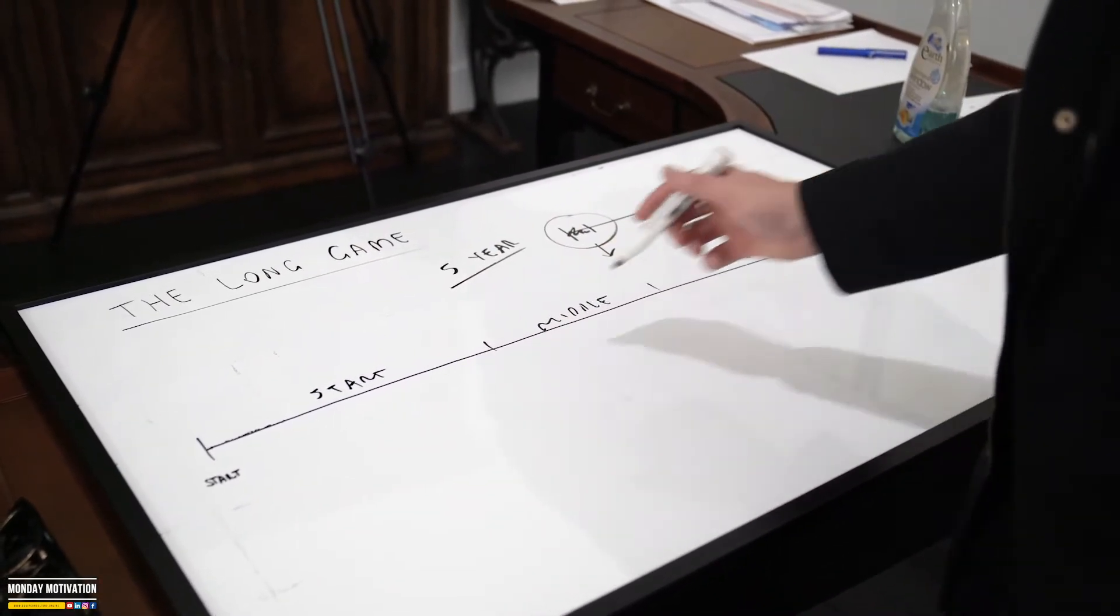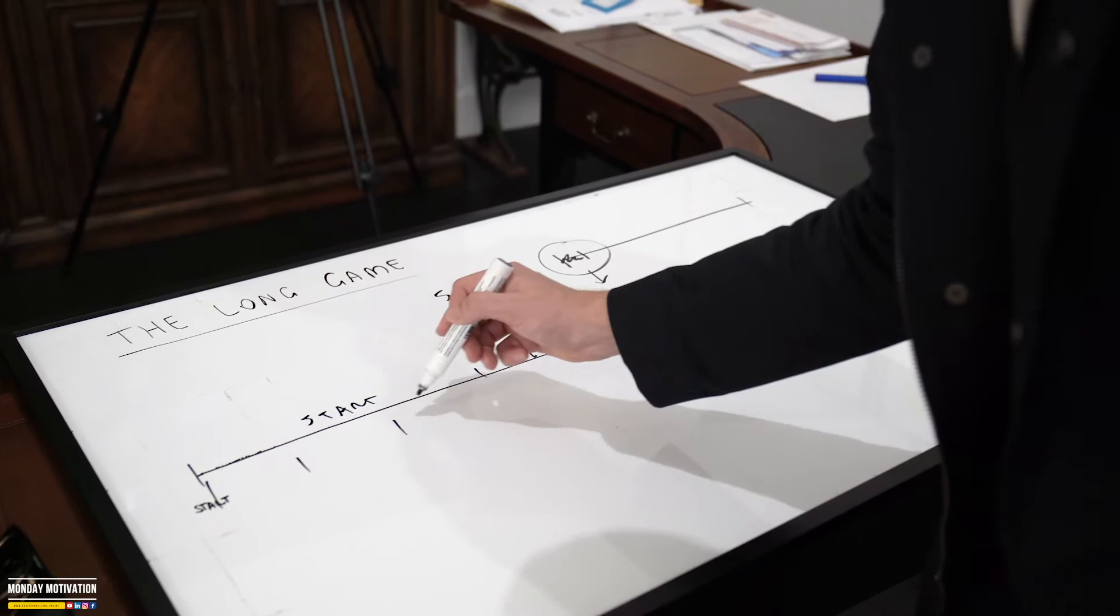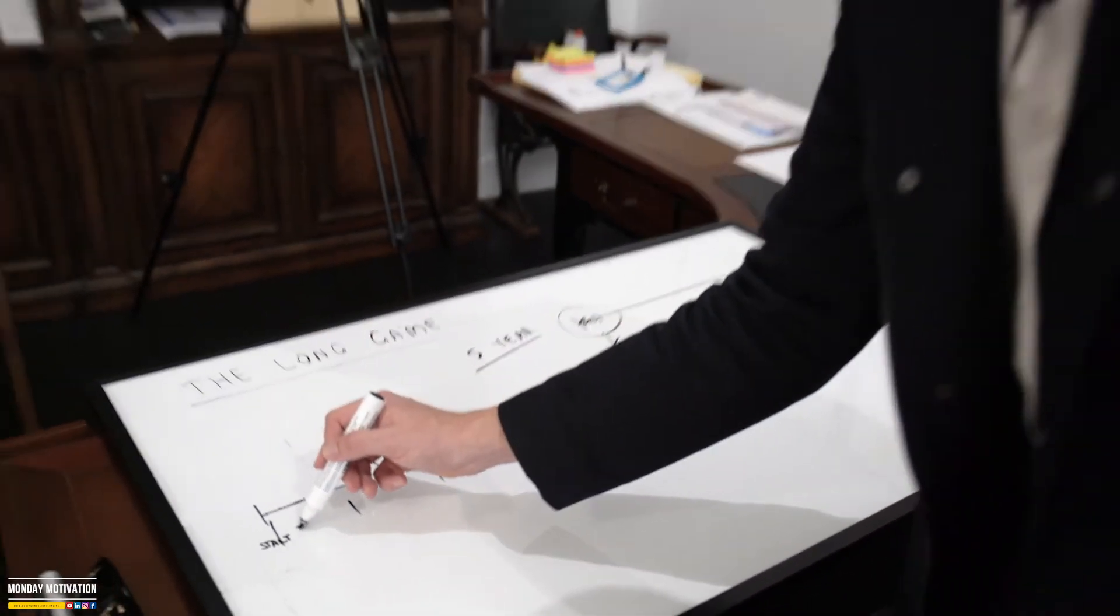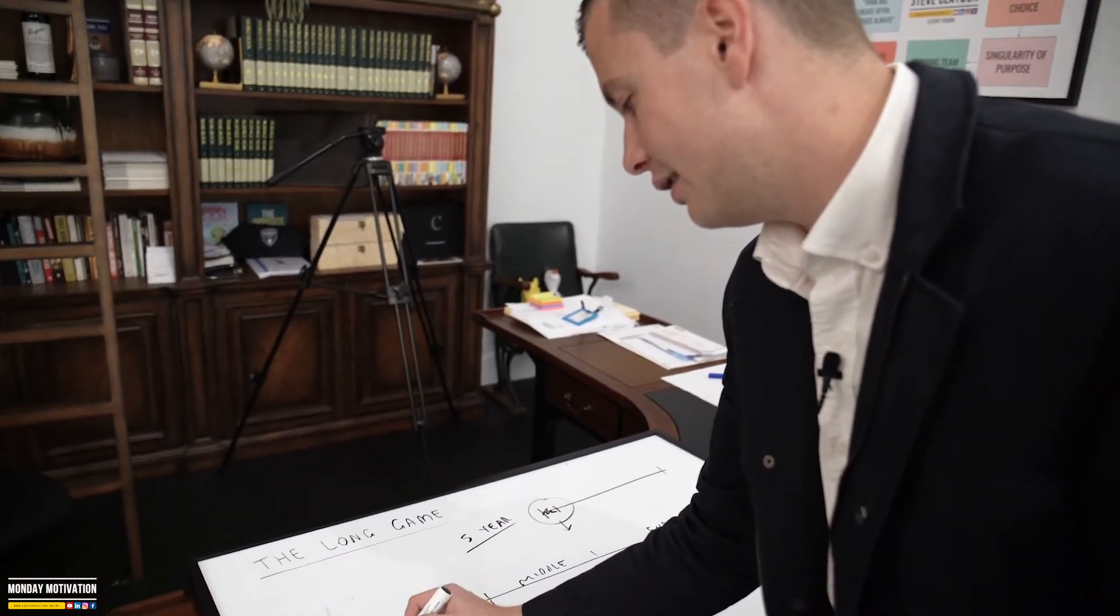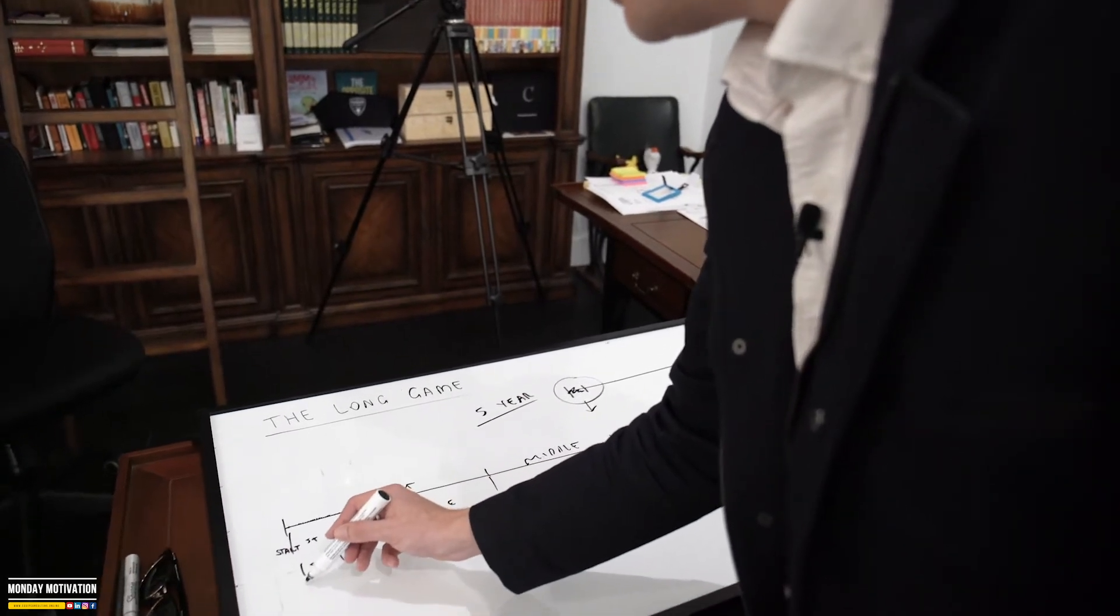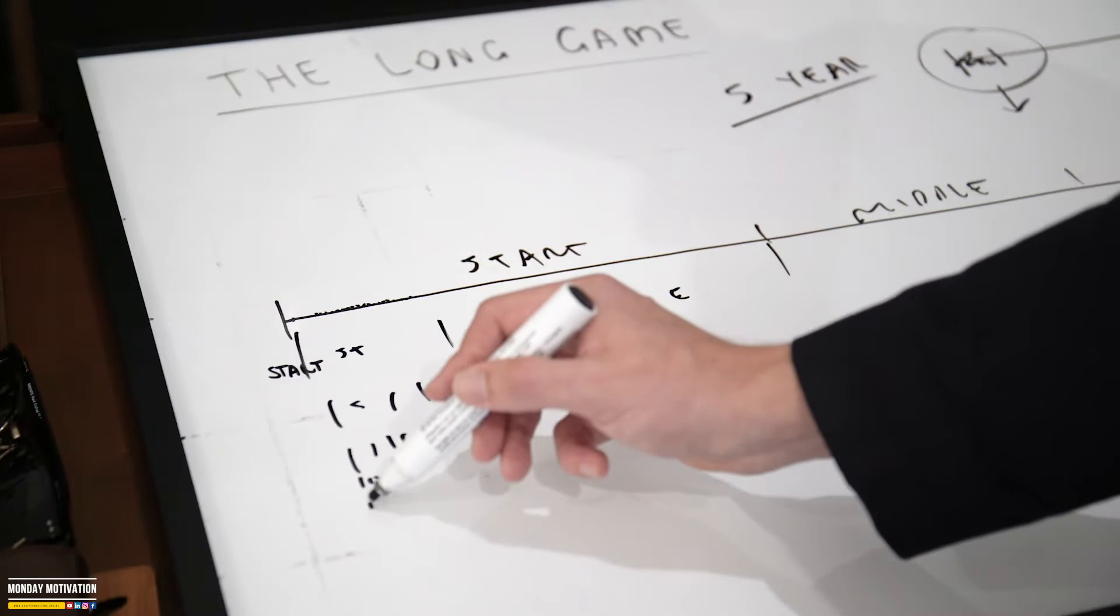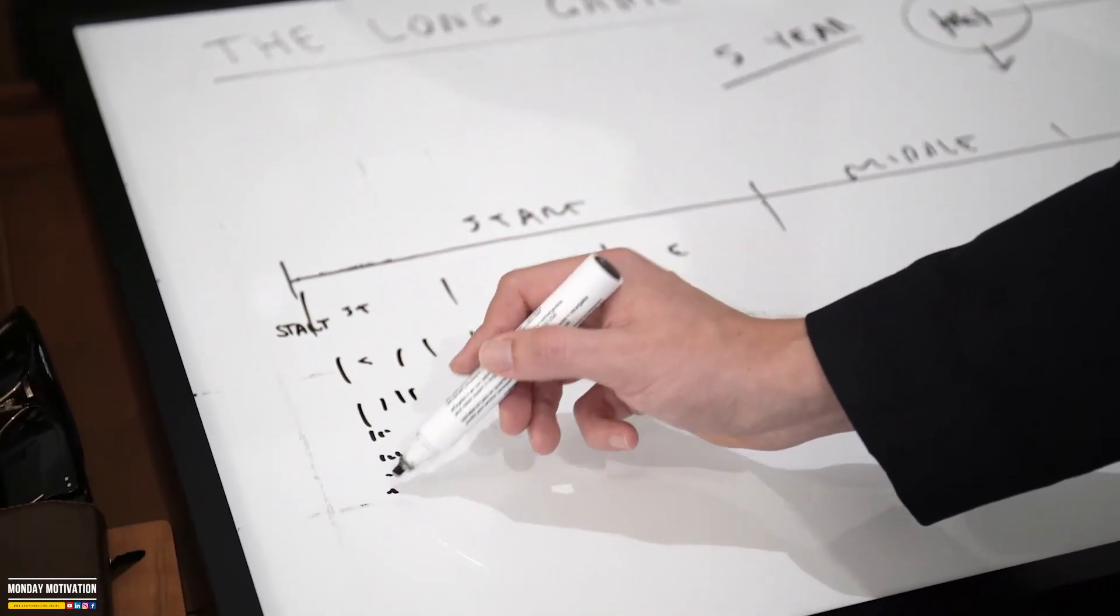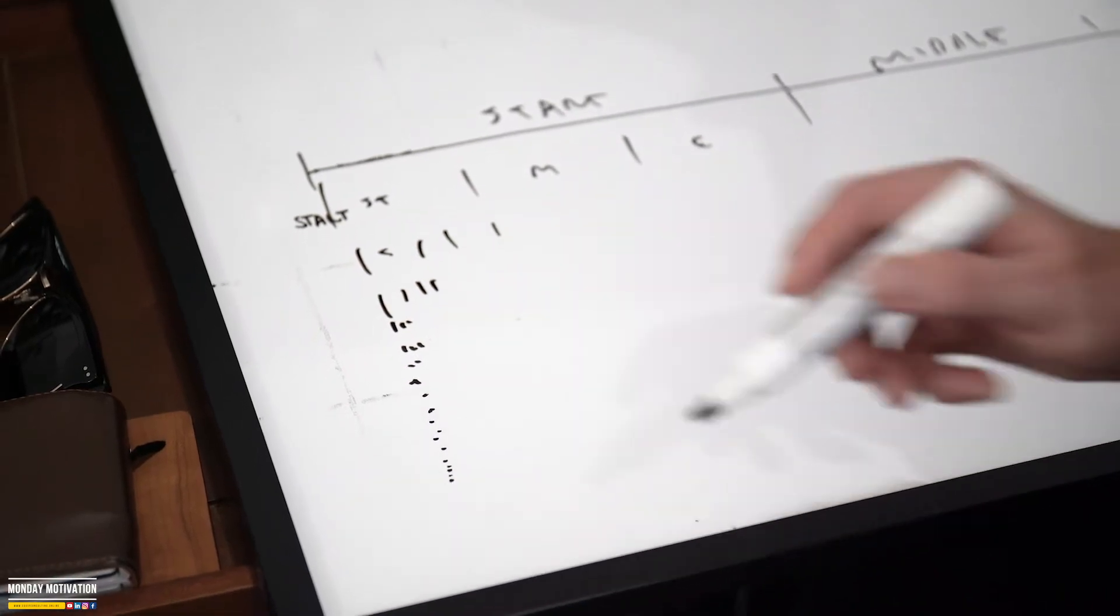Every start, middle, and end has another start, middle, and end. We're going to get quite deep here for a moment. There's a new start, there's a new middle, there's a new end. And then that start has a new start, middle, and end. And then that start has a start, middle, and end. And then that start has a start, middle, and end. And then that start has a start, middle, and end. All the way down until you're in a moment of time.